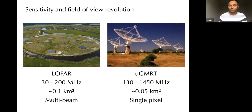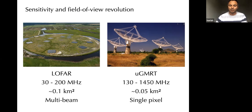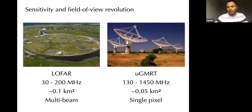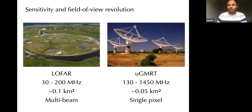LOFAR really solves both problems of sensitivity and time-on-sky needed to make these discoveries. I also want to mention GMRT in India — an older technology using dishes, but with fantastic spectral coverage spanning the entire band from about 100 to 1450 MHz. That's a decade in bandwidth, and it's quite sensitive. So once you make a discovery with a wide-field telescope like LOFAR, GMRT is a great instrument for follow-up at different frequencies. This combination is quite unique.